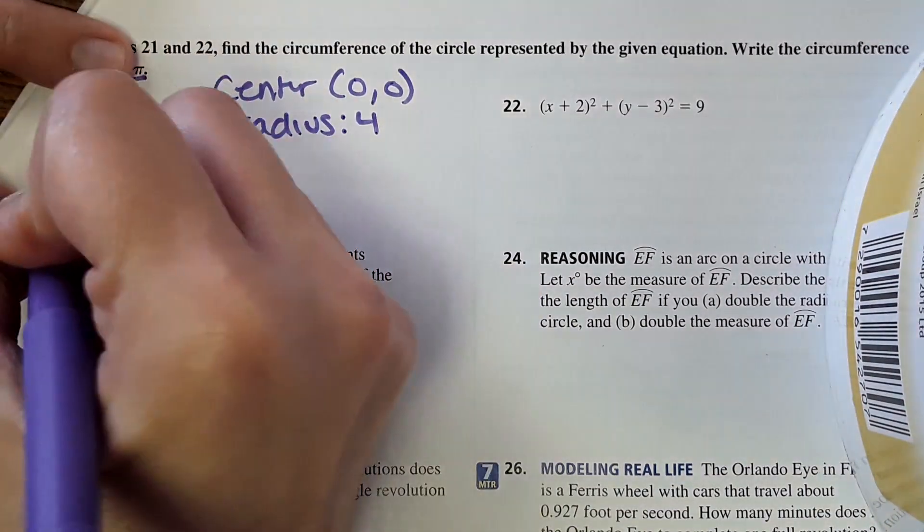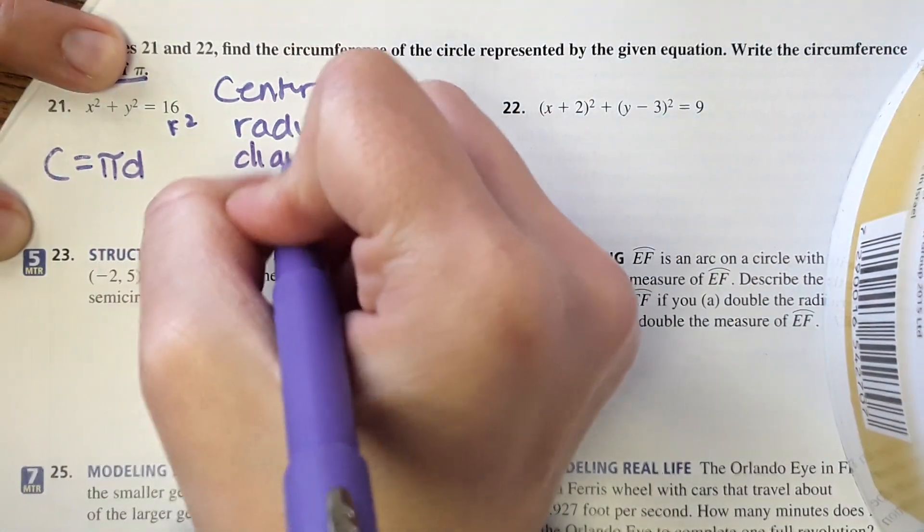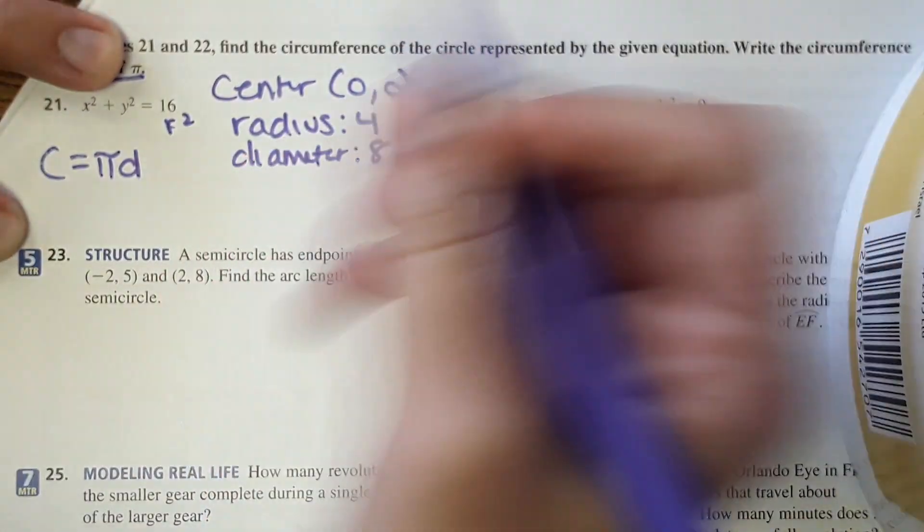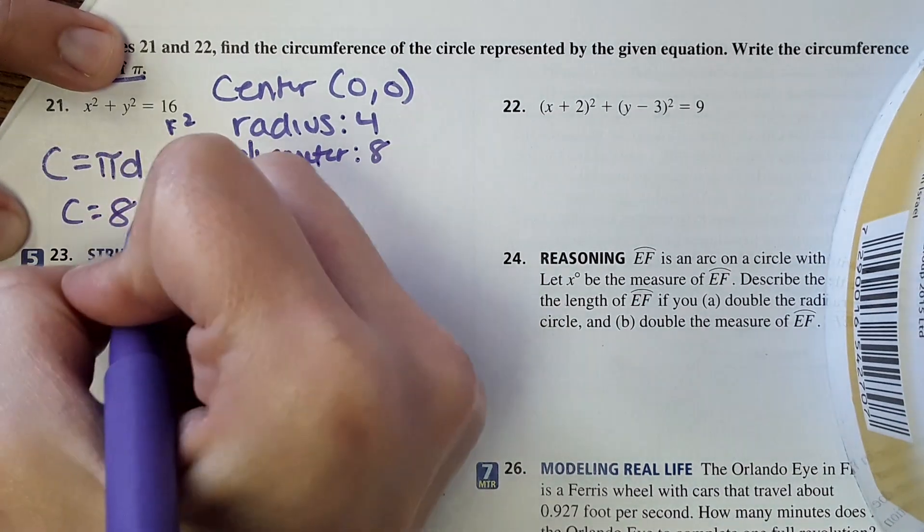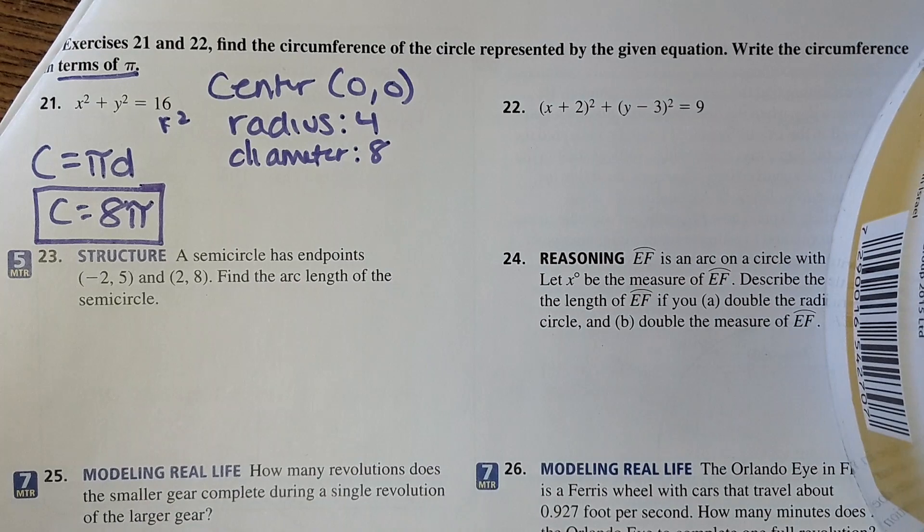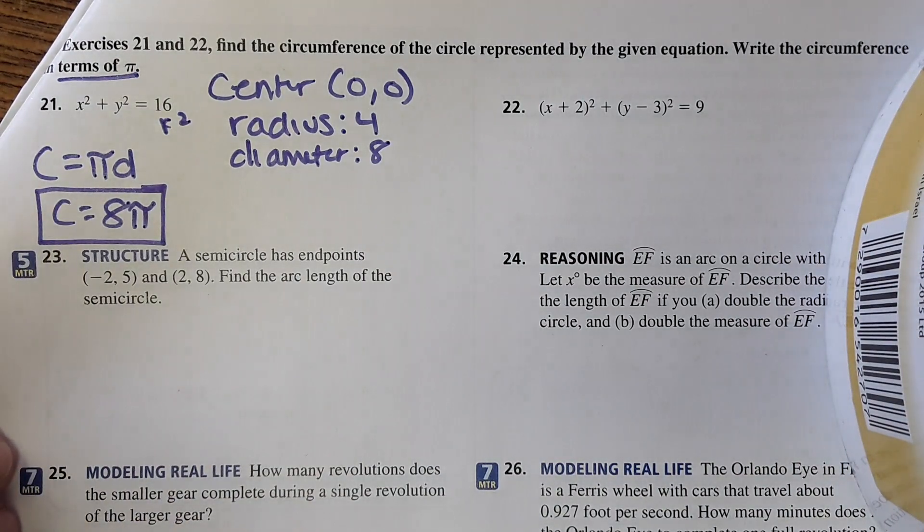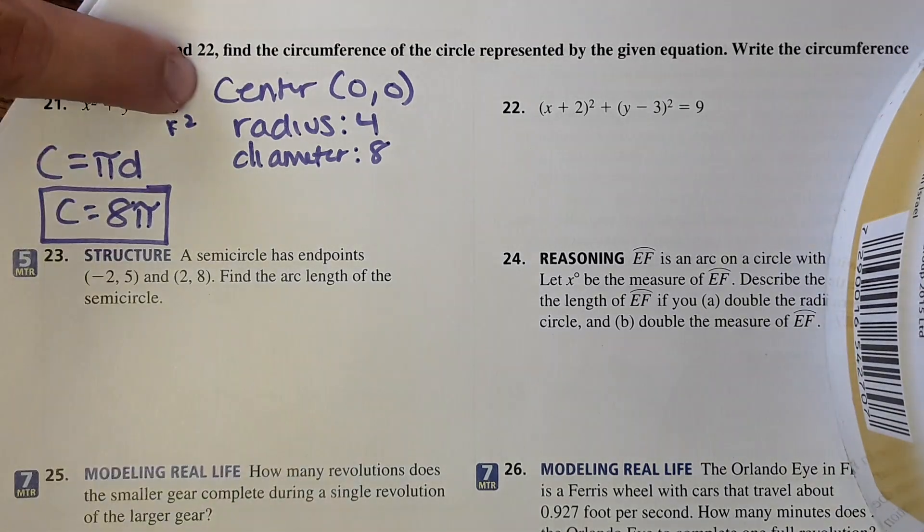It asks us for circumference. Circumference is pi times diameter, so the diameter would then be 8, and our answer would be 8 pi. It says to leave it in terms of pi, so we're done at that point. By the way, I didn't really need to find the center, I was just trying to review what we did yesterday.